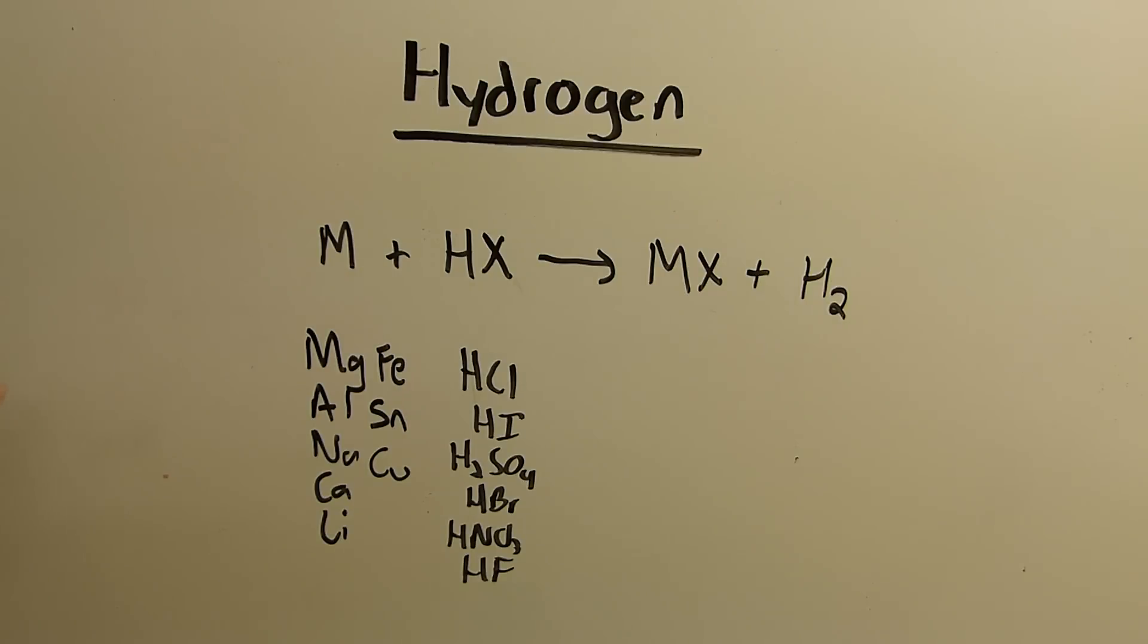Anyway, the basic hydrogen generator is very simple. It involves a metal and an acid. The metal attacks the acid and forms the metal salt and hydrogen gas.